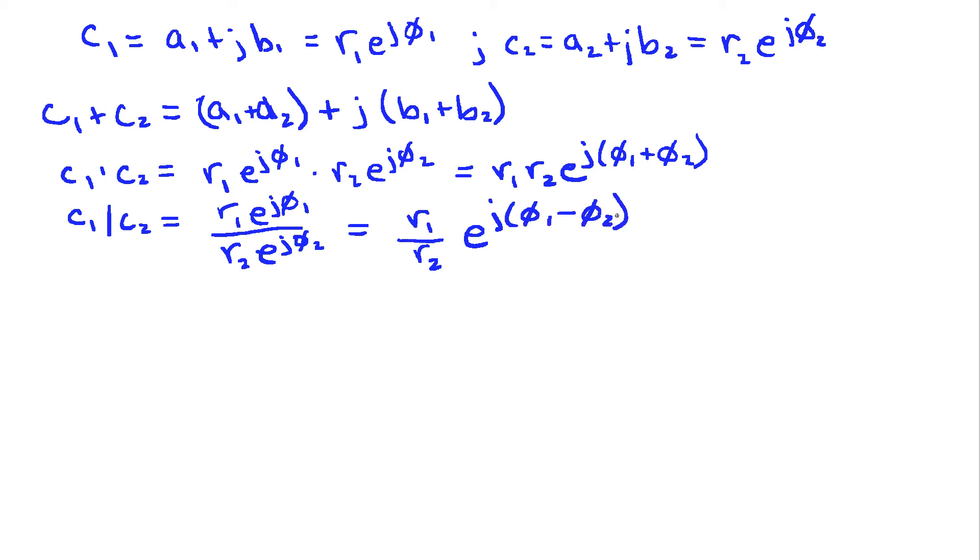So that's the basics of addition, multiplication, and division with complex numbers. There's one additional thing that I want to introduce here, and that's the idea of complex conjugate. When we take the conjugate of a number, we replace j by minus j. We flip the sign of the imaginary term. And we'll denote complex conjugate by an asterisk symbol. So if I have c with an asterisk next to it, that means I'm taking the complex conjugate of c.